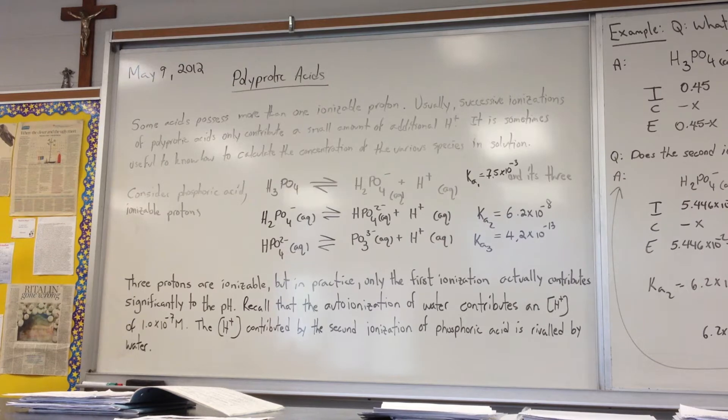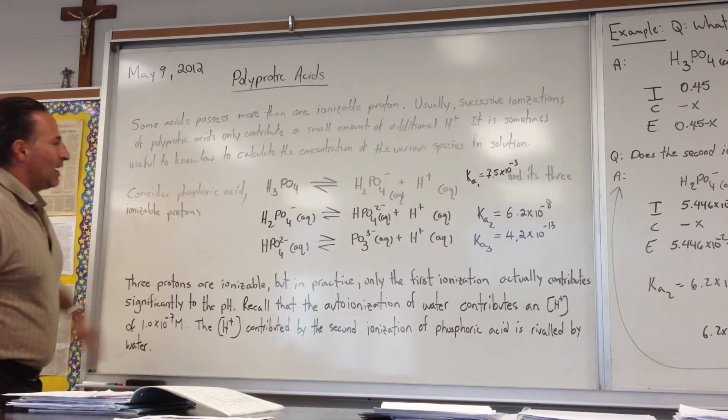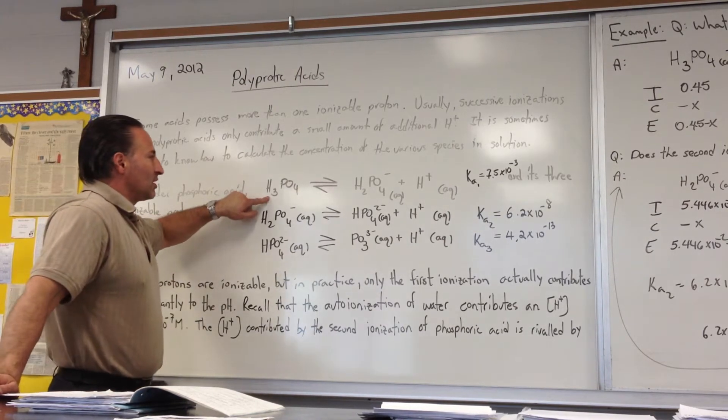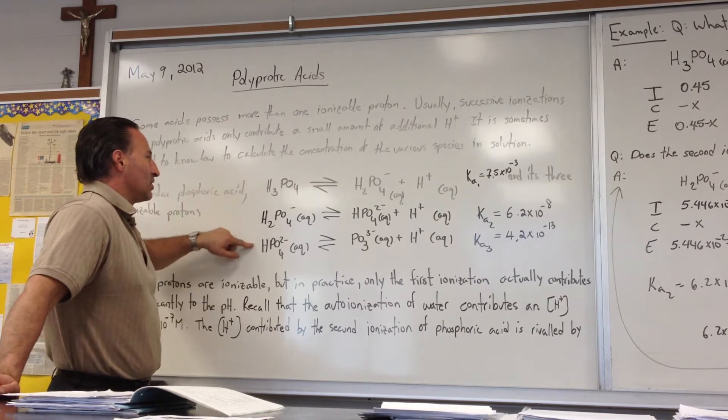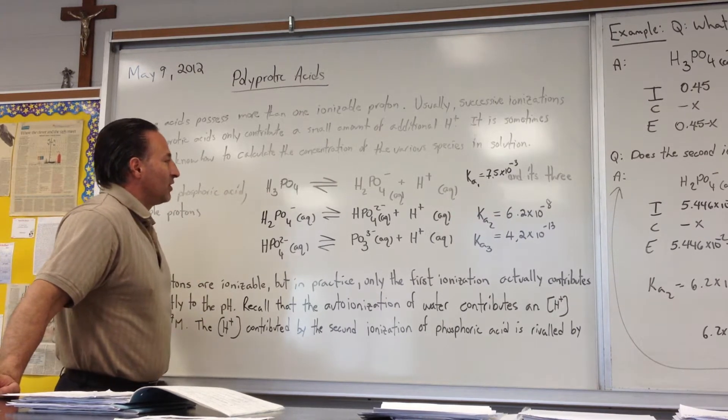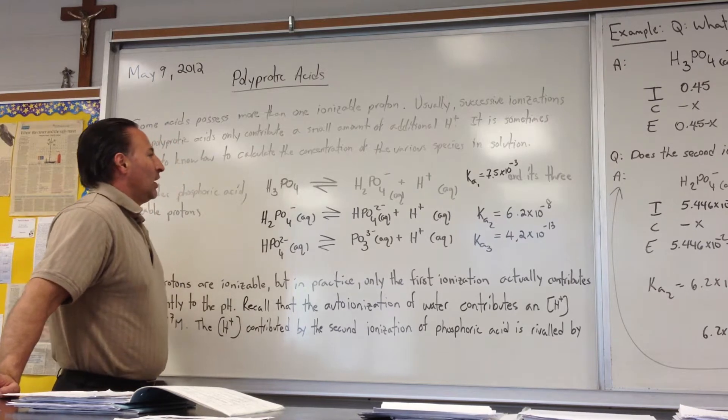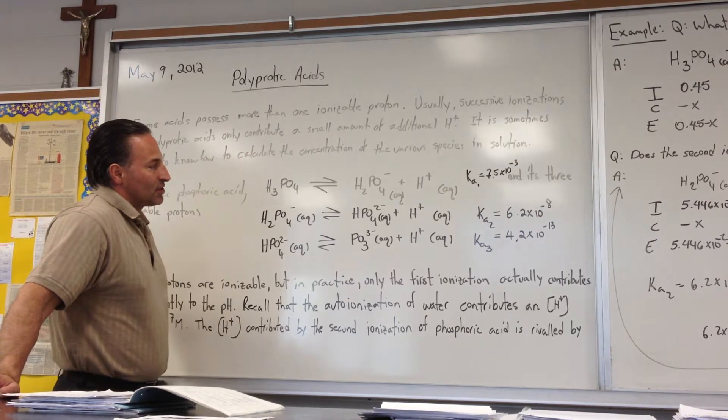We took as an example phosphoric acid. Phosphoric acid has three ionizable protons and I'll show the three successive ionizations. It starts off with the formation of dihydrogen phosphate, and Ka, the K for the first ionization, is 7.5 times 10 to the minus 3.